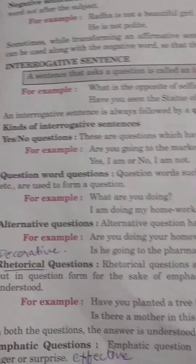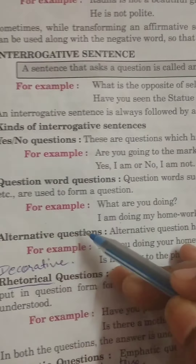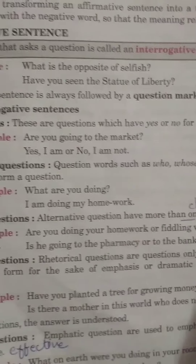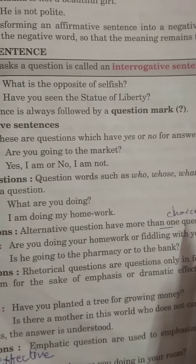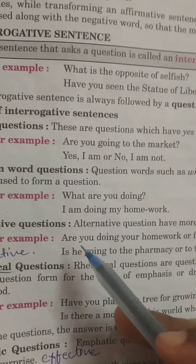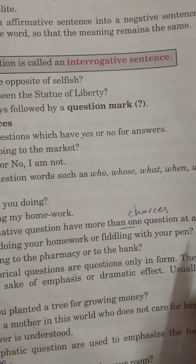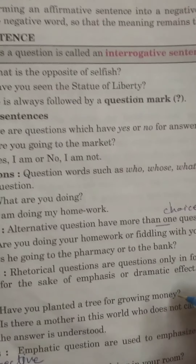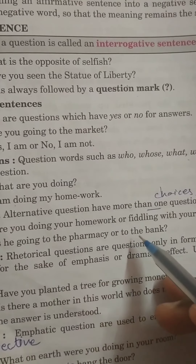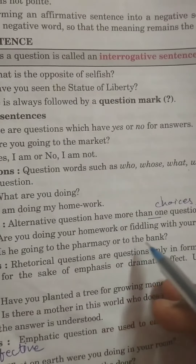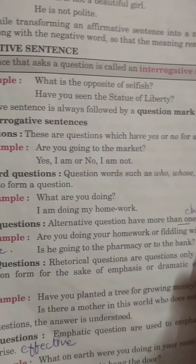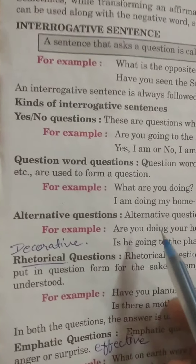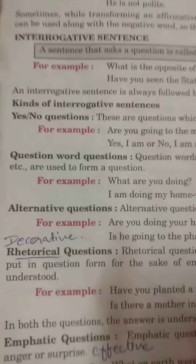Next are alternative questions. Alternative questions have more than one option at a time — they are choice-based questions. For example: 'Are you doing your homework or fiddling with your pen?' 'Is he going to the pharmacy or to the bank?' These questions offer choices.